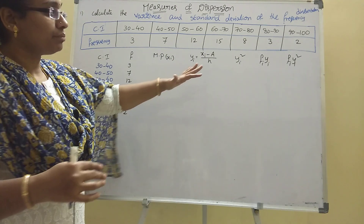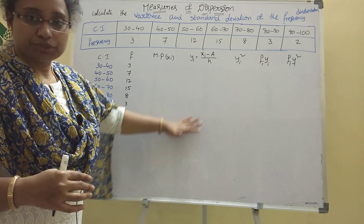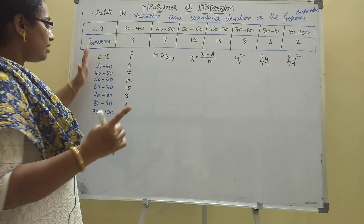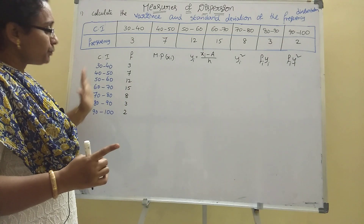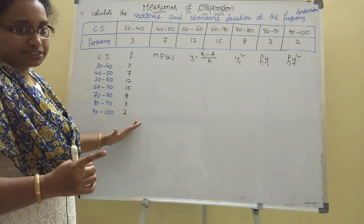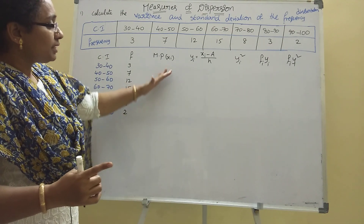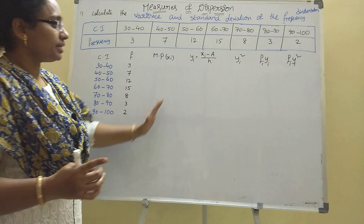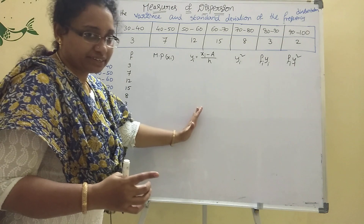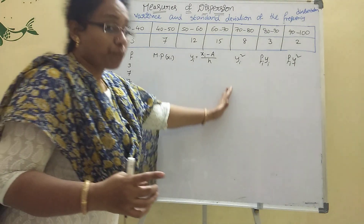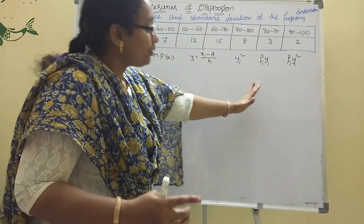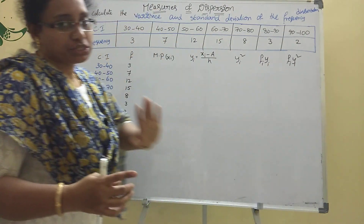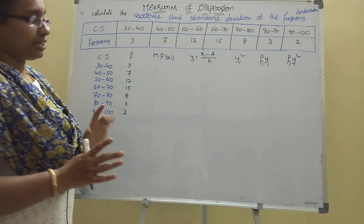We will set up columns: xi (midpoint), yi, yi², fi·yi, and fi·yi². These are the columns we need to calculate variance and standard deviation.